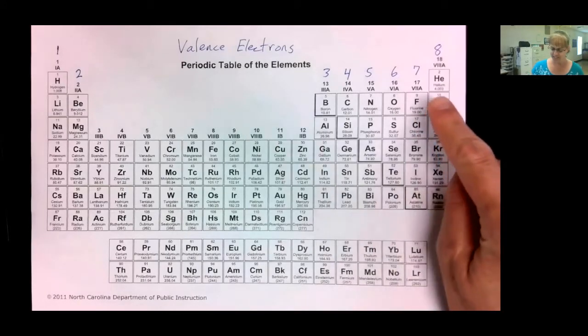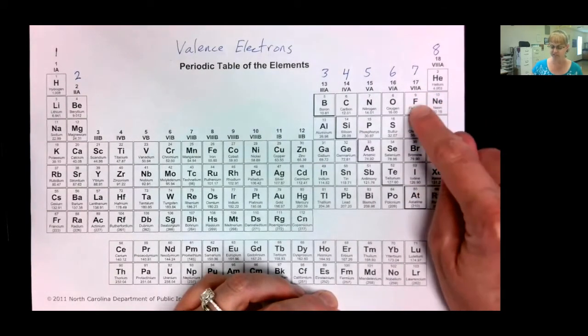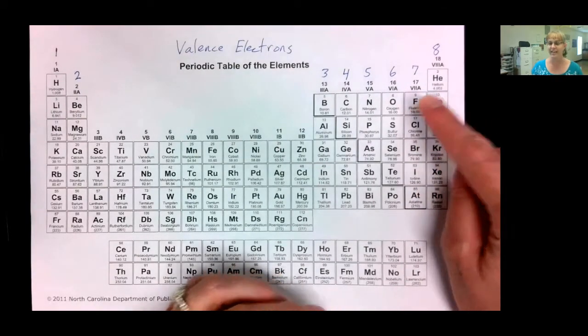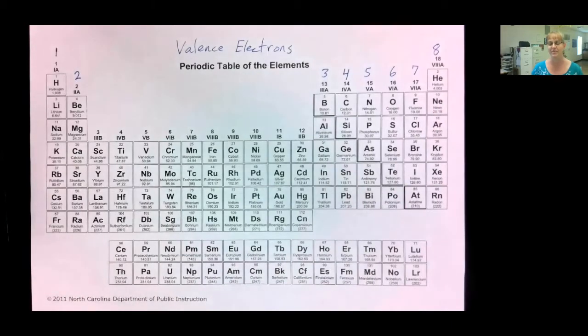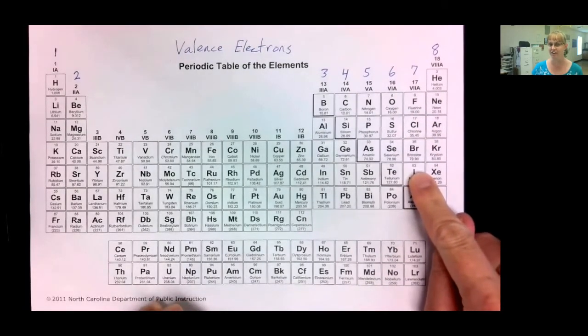If an element is in group 7A with seven valence electrons, such as fluorine, fluorine has seven valence electrons. It is dying to get one more so it can have eight. And so, it's going to take those electrons from anybody that it can. It will rip the electrons away from another element so it can have eight. That's why group 7A is so very, very reactive.